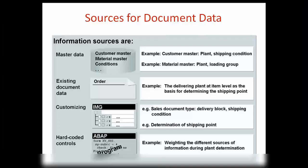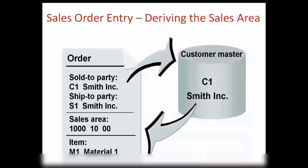So in a sales order, the sources of data are basically: master data, existing document data, customizing, and hard-coded controls — that is ABAP programs. These are the sources of data in a sales document.